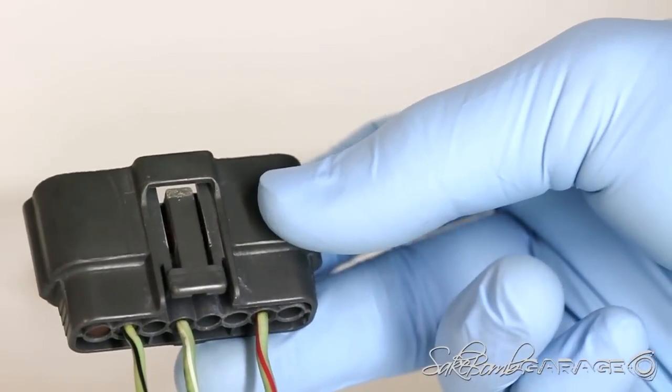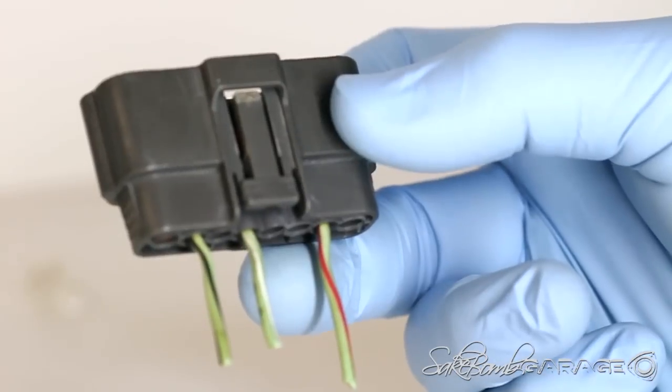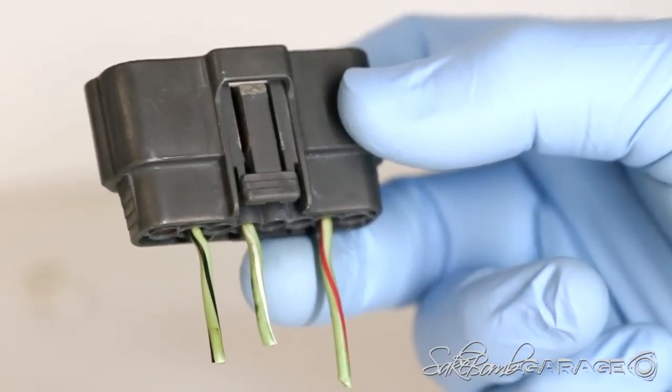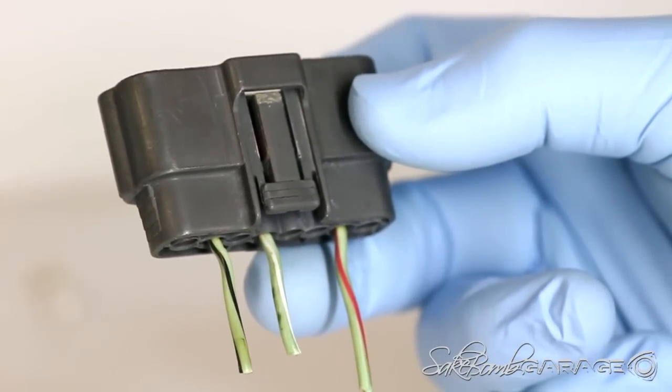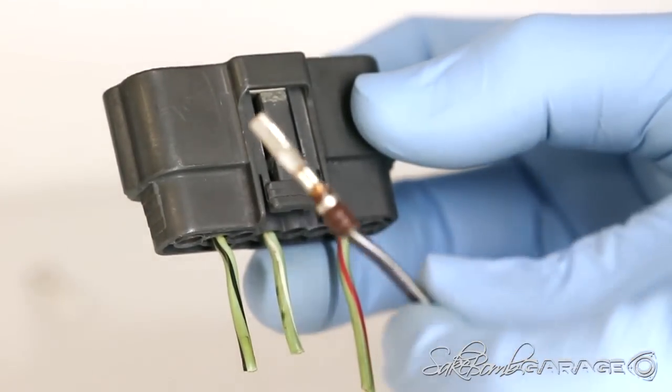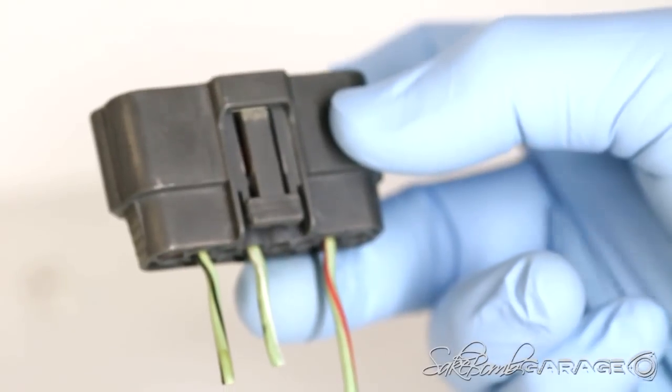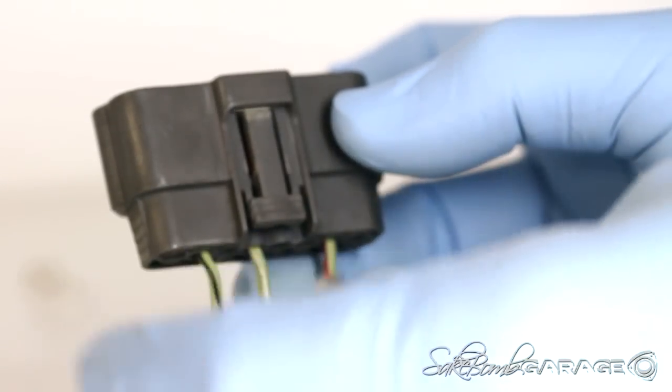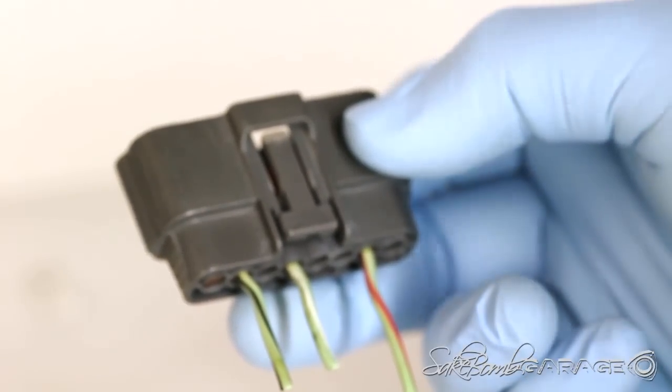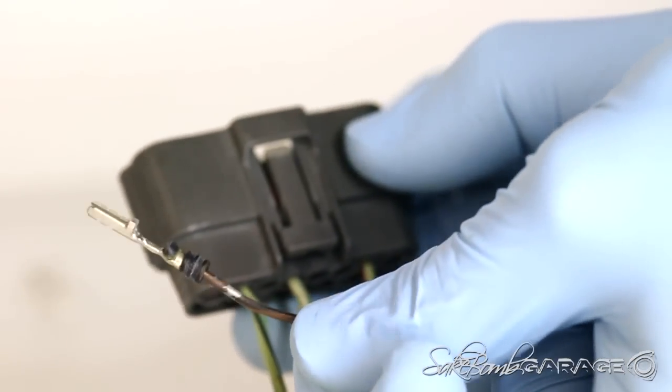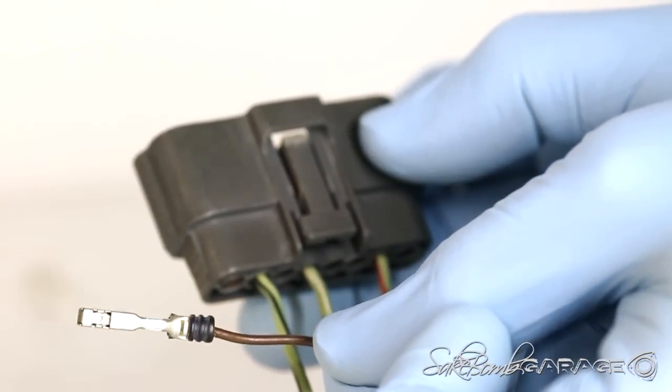Alright, so now that we've learned how to de-pin the connector, there's going to be four pins that we need to use for our new harness and our new Sumitomo connector. The four pins that we need to use are black and white, light green with no stripe, brown with black stripe, and brown with no stripe.